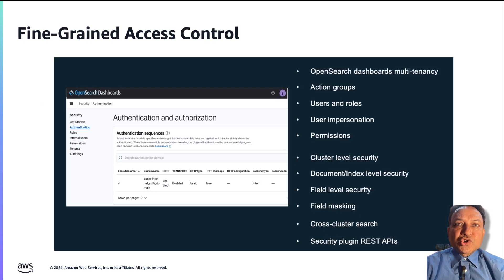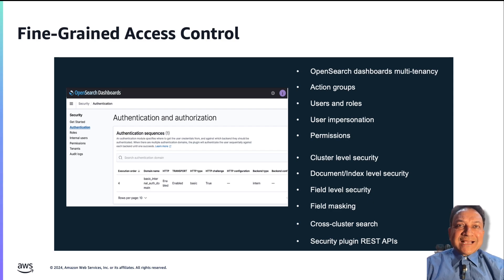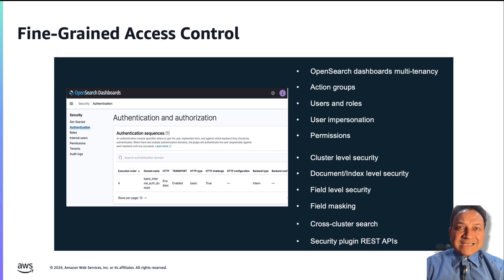Fine-grained access control in Amazon OpenSearch Service offers additional mechanisms for controlling access to your domains. Fine-grained access control allows controlling which indices are searched for a particular query, which documents are returned as a response to a query, and even which fields within a document are returned depending on what permissions a particular user has.